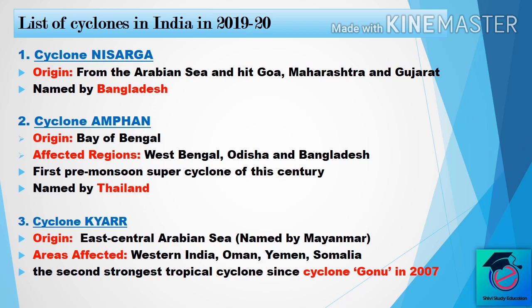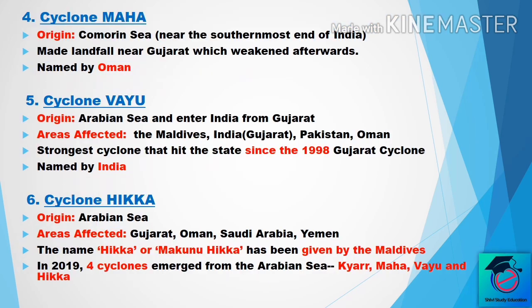The fourth one is Cyclone Maha. Its origin was from the Lakshadweep Sea, near the southernmost end of India.